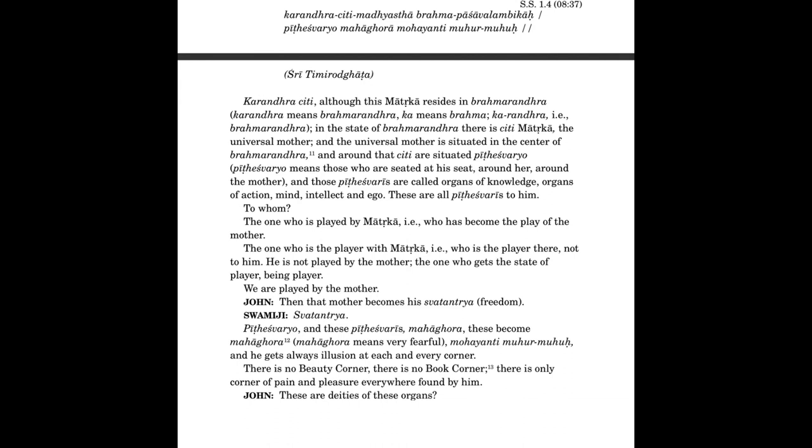Karandracheti madhyastha brahmapashava lambika pithesharyo mahagora mohoyanti mohur moh. Karandracheti. Although this matrika resides in brahmarandra. Karandra means brahmarandra. Ka means brahma, ka randra, brahmarandra. In the state of brahmarandra there is cheti, matrika, the universal mother. And universal mother is situated in the center of brahmarandra. And around that cheti are situated pithesharyo. Pithesharyo means those who are seated at his seat around her, around mother. And those pithesharies are called organs of knowledge, organs of action, mind, intellect and ego. These are all pithesharies to him. To whom? The one who is played by matrika.